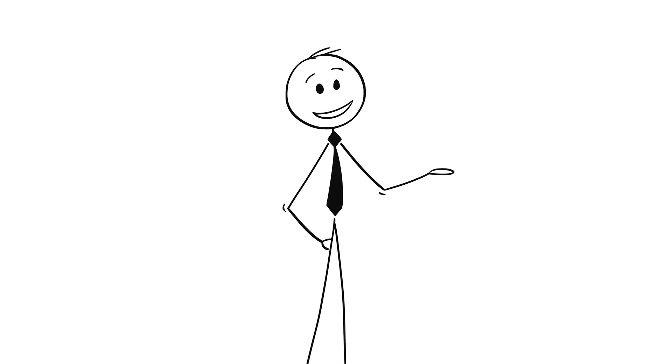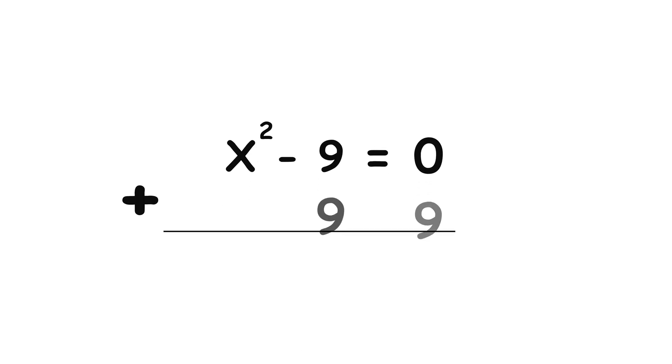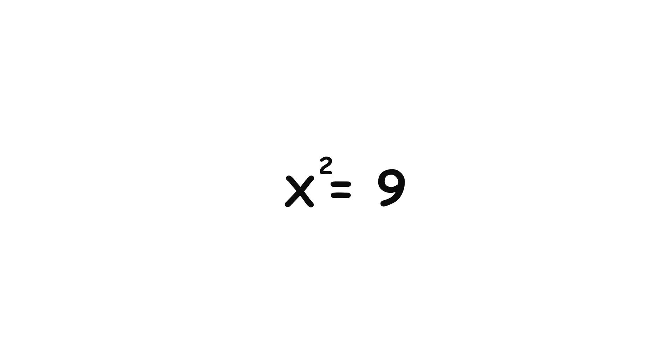As is usual in math, let's start with something slow and simple: x squared minus 9 equals 0. First, we add 9 to both sides, giving us x squared equals 9.